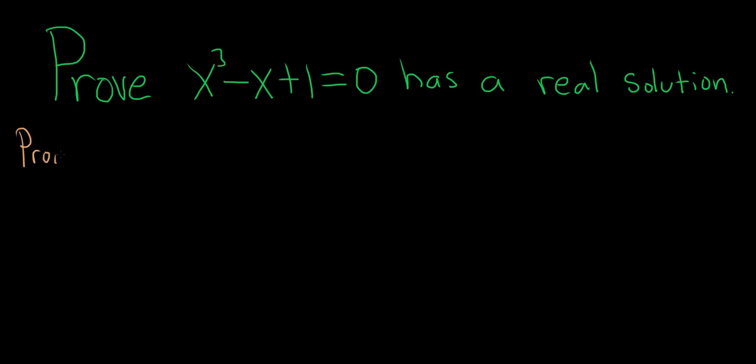So proof. In order to prove that this has a real solution, we're going to use something called the Intermediate Value Theorem. So first we'll start by defining a function. We're going to set f of x equal to x cubed minus x plus 1.